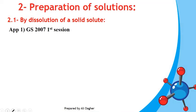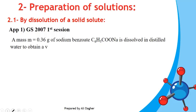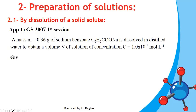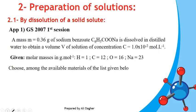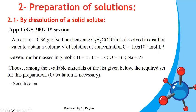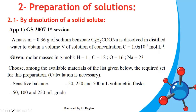Application 1: A mass M equals 0.36 g of sodium benzoate C₆H₅COONa is dissolved in distilled water to obtain a volume V of solution of concentration C equals 1×10⁻² mol per liter. Given molar masses in g/mol: H = 1, C = 12, O = 16, Na = 23. Among the available materials — precision balance, volumetric flasks of 50, 250, and 1500 mL, graduated cylinders of 50, 100, 250 mL, funnel, spatula, and watch glass — determine the required set of materials for this preparation.